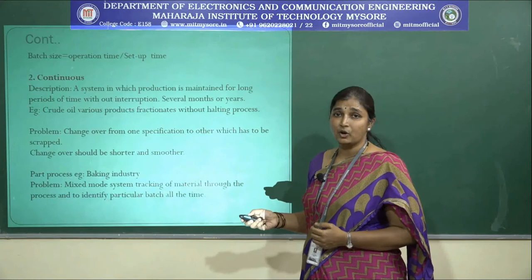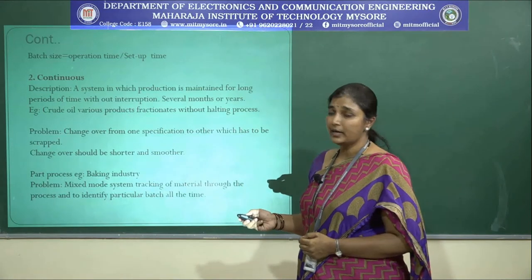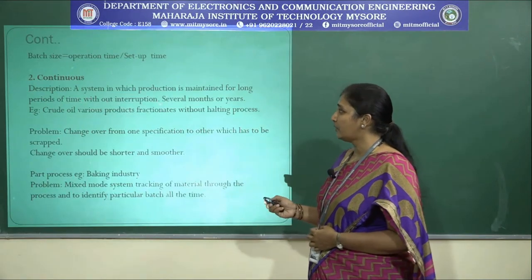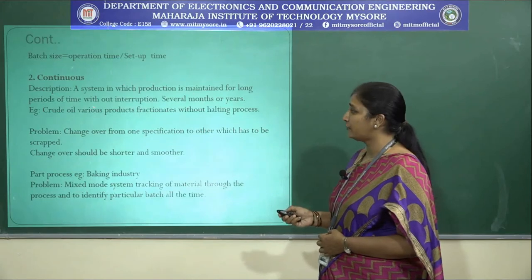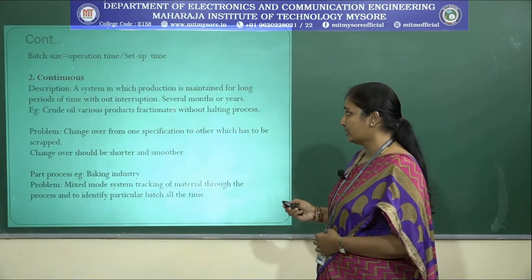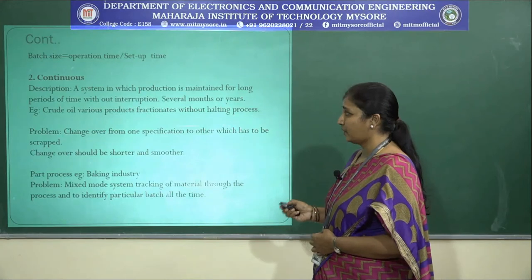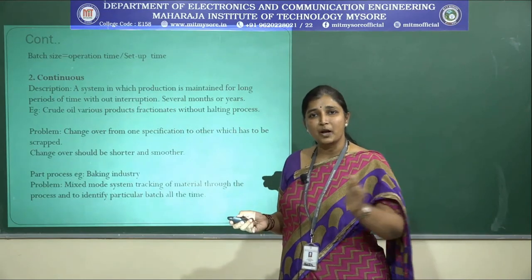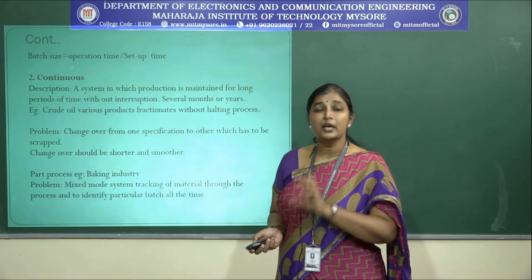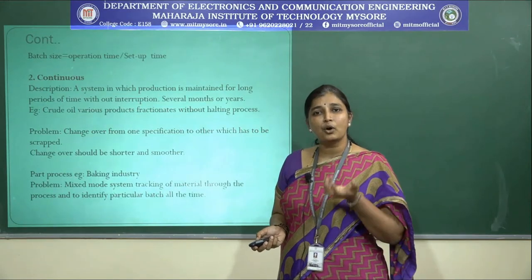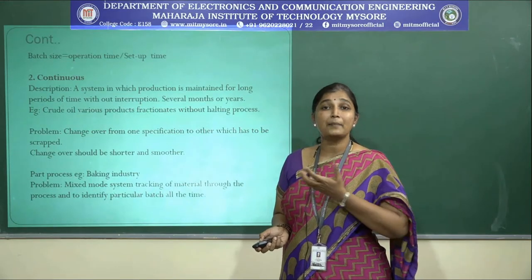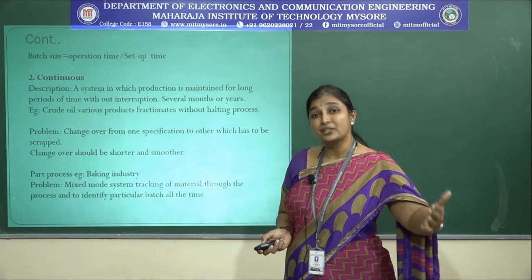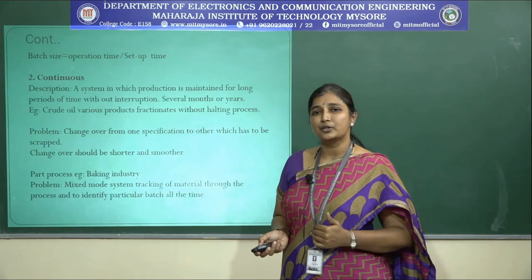The second category is continuous. A continuous system is one in which production is maintained for a long period of time with output interruptions spanning several months or years. As the name indicates, it requires continuous production. For example, the extraction of crude petroleum must be continuous — there should be absolutely no interruption in the continuous stream, and there can be multiple batches involved concurrently in a continuous system.